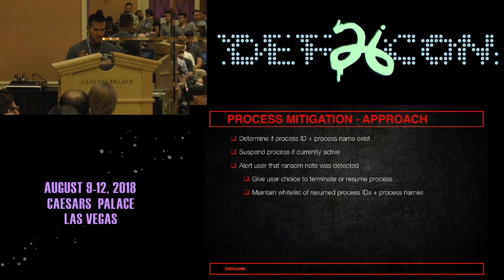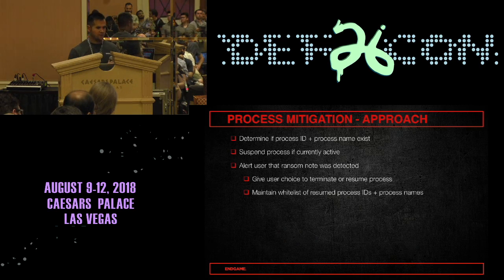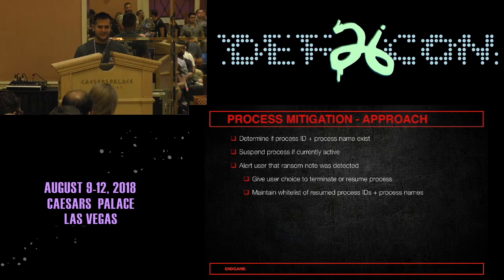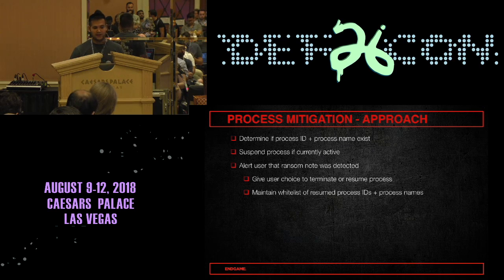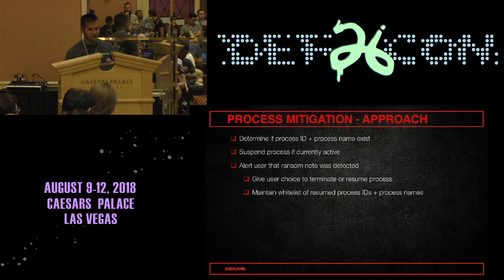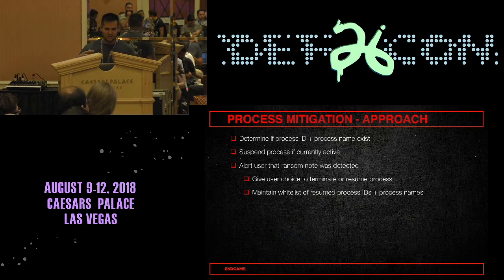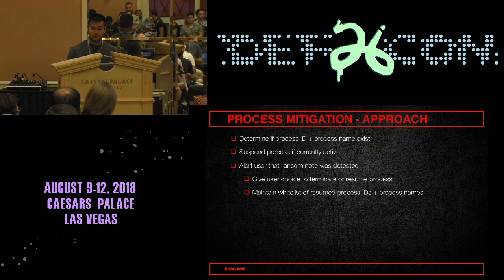For process mitigation: we determine whether the process is currently active with that ID and process name. If it is active, we suspend it, alert the user that this activity occurred on their host, and give them a choice to terminate or resume the process.